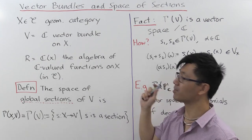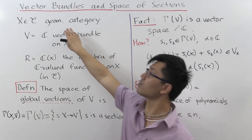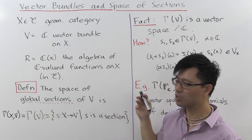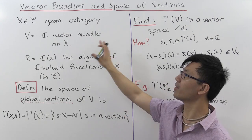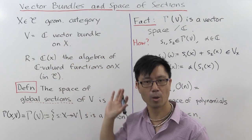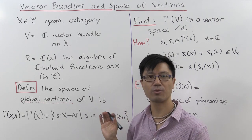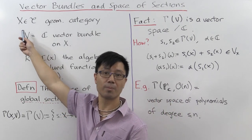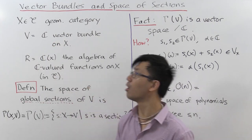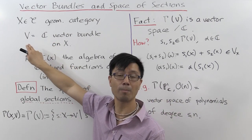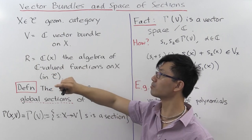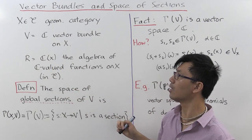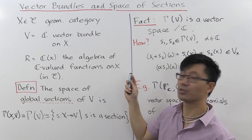So let's see what our setup is. We'll start with some sort of geometric category, and today we'll just restrict our attention so that C will either be the category of topological spaces or the category of complex manifolds. X will be our geometric object on which we have some sort of complex vector bundle V. Today we'll just restrict to the complex case to simplify matters.